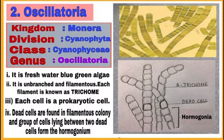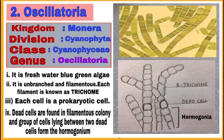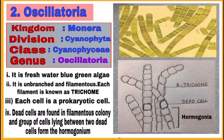Second is oscillatoria. Write its classification and note down its characteristic features. First, it is freshwater blue-green algae; it is unbranched and filamentous, and each filament is known as a trichome — you can note trichome in the diagram. Each cell is a prokaryotic cell. Also, dead cells are found in the filamentous colony, and a group of cells lying between two dead cells forms a hormogonium. Draw the diagram with pencil and label its parts on the left side of the practical notebook.